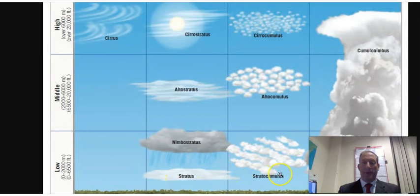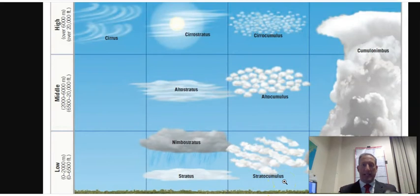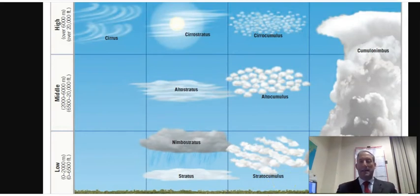Stratocumulus — 'strato' means low cloud, 'cumulus' means little cotton balls. So those are the low clouds we're going to be looking at.